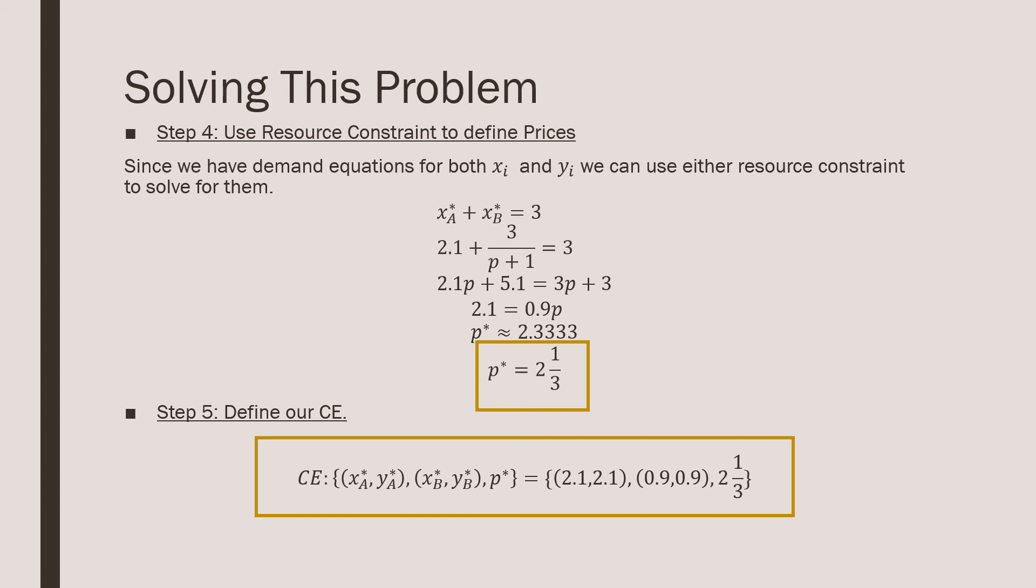I don't really show how we do it here, but what I'm doing is that I'm taking this number for the prices and I'm plugging it into our demand equations. The way we're going to write this competitive equilibrium is that we're going to say that it is equal to (2.1, 2.1) for consumer A, meaning he's going to consume both of those in perfect complements, and for consumer B he's going to consume (0.9, 0.9), and this equilibrium is supported by the price of two and one-third.